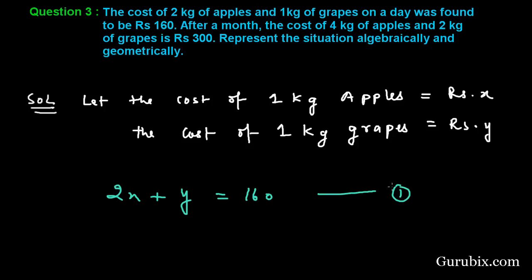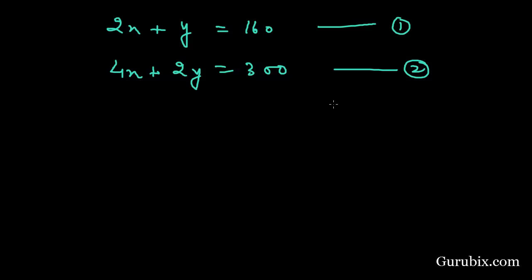This is our equation number 1. In the second condition we are given that the cost of 4 kg apples, this means 4x plus 2y, this means 2 kg of grapes is Rs. 300. This is our equation number 2 and this is the algebraic representation of the question.